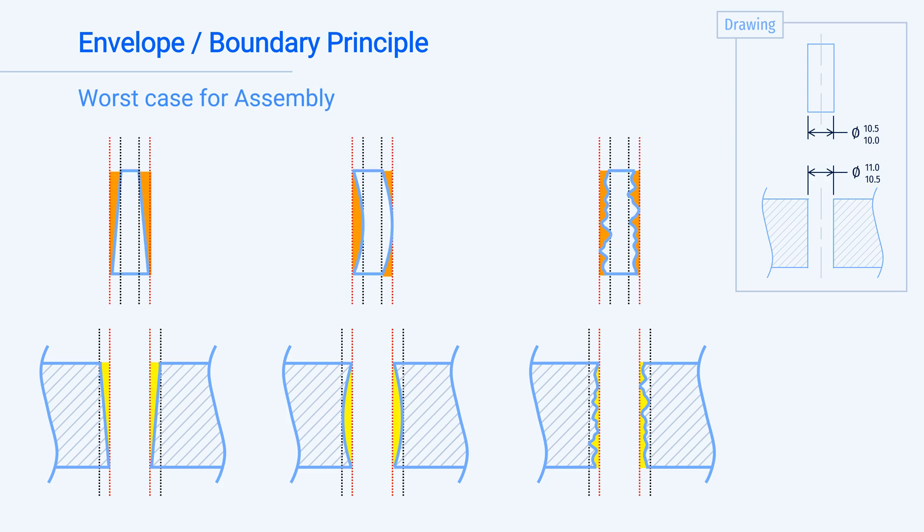If we drew lines around this maximum boundary that an actual part can occupy, we see that the shape of this boundary is the same as the nominal or perfect shape shown on our drawing, and that for all shapes of actual parts, this is the same boundary. Additionally, we see that the size of this boundary is the nominal or perfect shape at its MMC size.